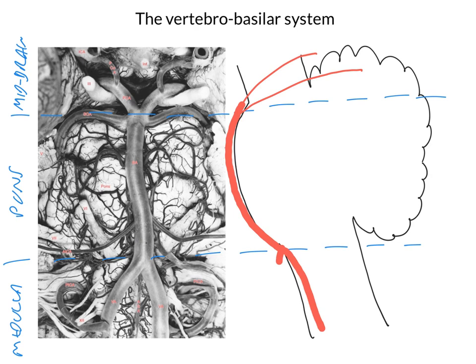Now you can see why we say that the posterior cerebral artery and the superior cerebellar artery both supply the midbrain — because on their way to their ultimate destinations, they send off branches which supply the midbrain itself. We'll show those little branches supplying the midbrain. So the posterior cerebral and the superior cerebellar arteries both supply the midbrain as they get to their ultimate targets.